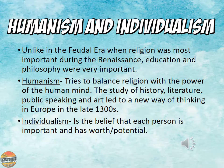Next we're going to go into humanism and individualism. In the feudal era, religion was one of the most important things, but once feudalism ended, the shift happened — religion is still important, but other things are now equally important during the Renaissance, including education and philosophy. When we look at humanism, it tries to balance religion with the power of the human mind. The study of history, literature, public speaking, and art led to a new way of thinking in Europe in the late 1300s. Individualism, on the other hand, is the belief that each person is important and has worth and potential. This goes along with the changes in how we look at status — it was more about your ability rather than your birthright.